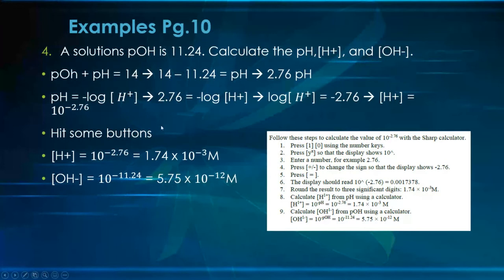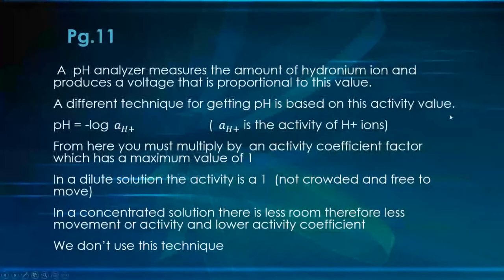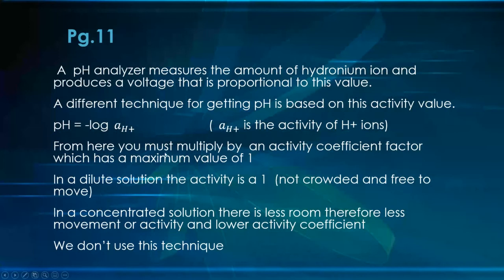pH analyzers, as we discussed in analyzers, measure the amount or concentration of hydronium ions and produce a voltage proportional to that concentration. A different technique for measuring pH is based on the activity of ions, which relates back to the Kw concept. That's background information — this slide isn't heavily testable — but it's good context.